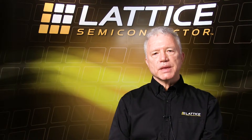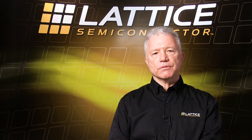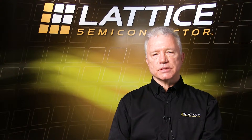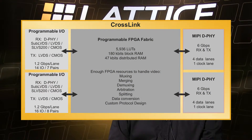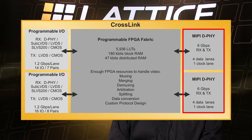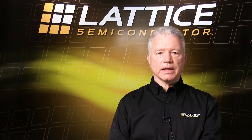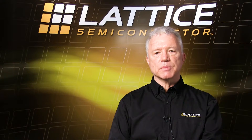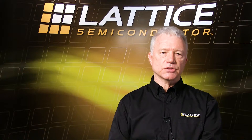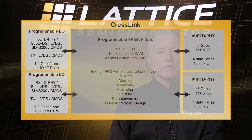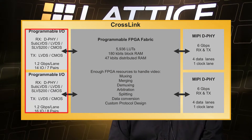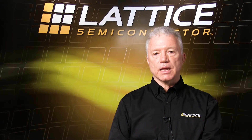The Crosslink PASSP is constructed of three basic sections. On the right is a set of two hardened MIPI DeFi blocks, each capable of transmitting or receiving up to four lanes at up to 1.5 gigabits per second each. The I/O sections on the left support a variety of I/Os, including SLVS, DeFi, and CMOS I/Os, to name a few.